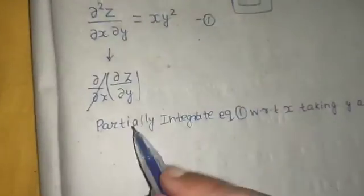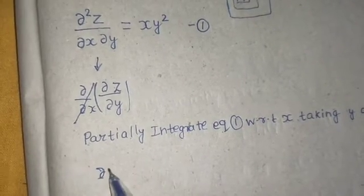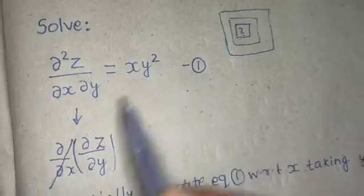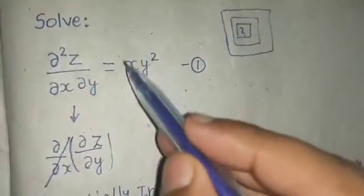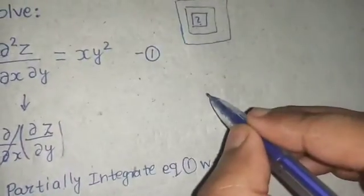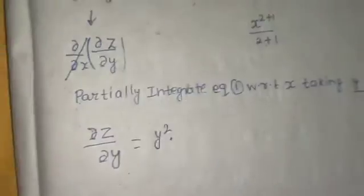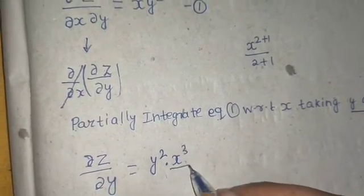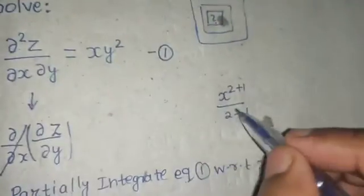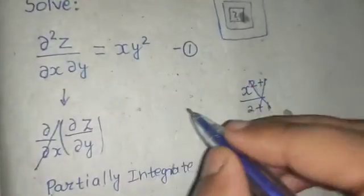When you integrate both sides, the del by del X will be removed or unwrapped, so you will end up getting del Z by del Y. On the RHS, since Y is treated as constant, Y squared remains as it is. Integration of X squared gives X to the power 2+1 divided by 2+1.